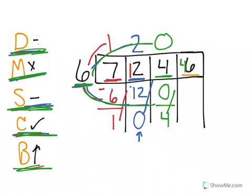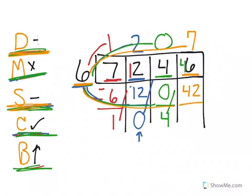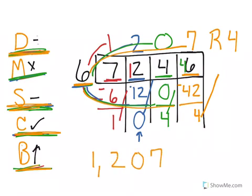So now I have 46 divided by 6. I need to get close to 46 without going over — that would be 7. So 46 divided by 6 is 7, because 7 times 6 equals 42. That gets me close without going over. Now I subtract: 46 minus 42 is 4. I check — that is less than 6. I have nothing left, so I have a remainder of 4. And there you have it: 1,207 remainder 4. That would be my answer.